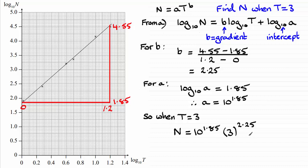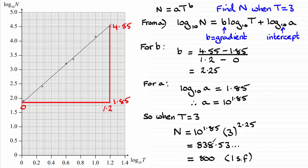Working this out, you'll find you get 838.53 and so on. To one significant figure that's 800, to two significant figures it's 840, and to three significant figures it's 839. I'm going to leave it as 800 to one significant figure. I hope that gives you some idea of how to do that.